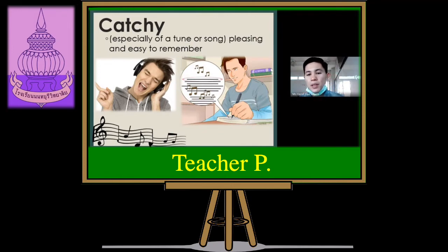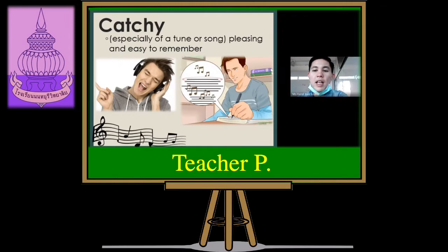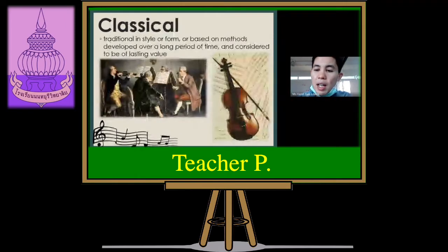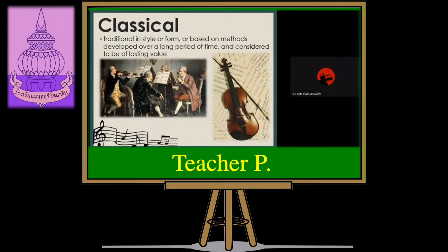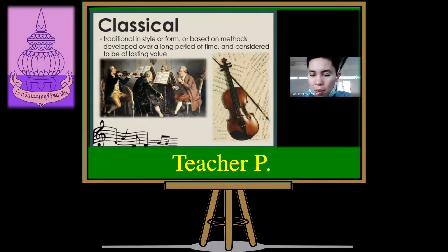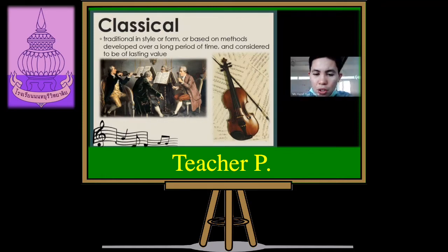Good. Now let's go to the next one: 'catchy.' How does it spell? C-A-T-C-H-Y. Now the next word is 'classical.' How does it spell? C-L-A-S-S-I-C-A-L. How do you read it? Classical.